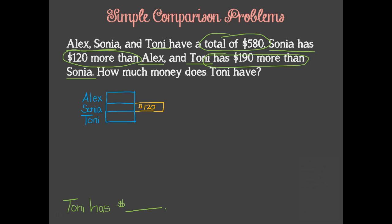We are also told that Tony has $190 more than Sonia, so we can add $120 onto her bar to equal what Sonia has, and then an additional unit to represent the $190 more that she has than Sonia. Since we are told that they have a total of $580, we can put a bracket around all their money and label it $580.